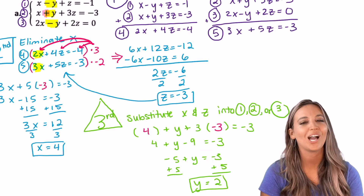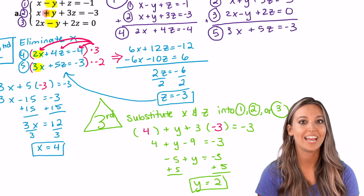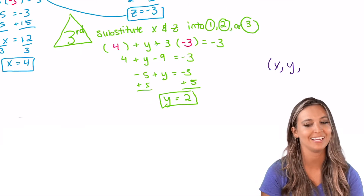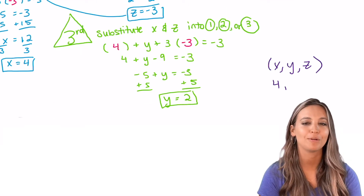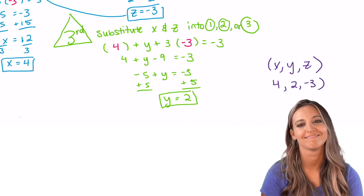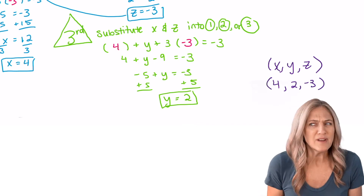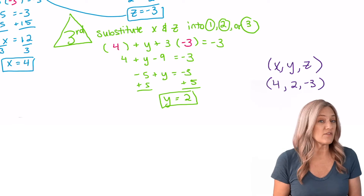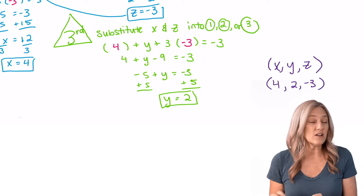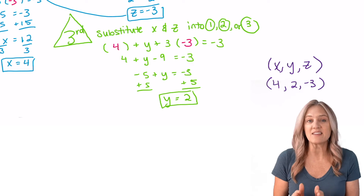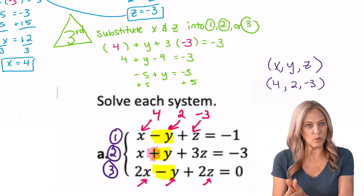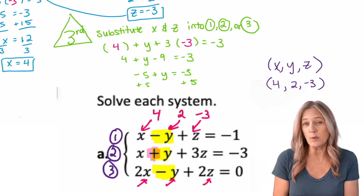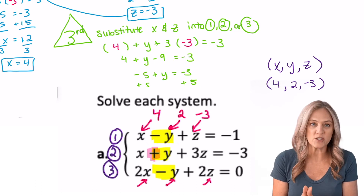We get y = 2. Now write this as an ordered triple (x, y, z): four, two, negative three. To check the answer, since we used equation two to find y, we only need to test the ordered triple in equations one and three. As long as it works in all three equations, we know it's the solution to the system.